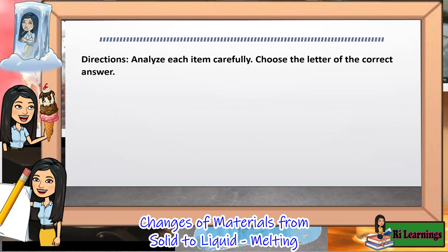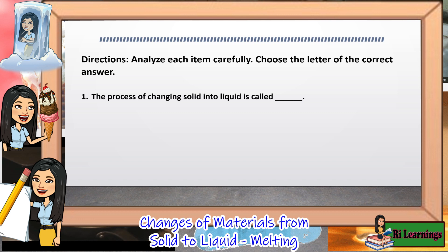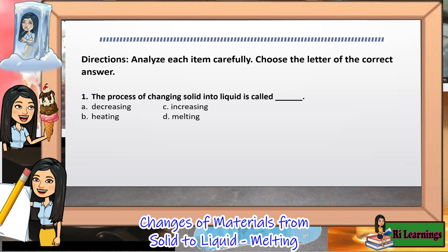Now let's have an activity. I want you to get your paper and pencil. Analyze each item carefully. Choose the letter of the correct answer and write it on your paper. Number 1: The process of changing solid into liquid is called blank. A. Decreasing. B. Heating. C. Increasing. D. Melting.